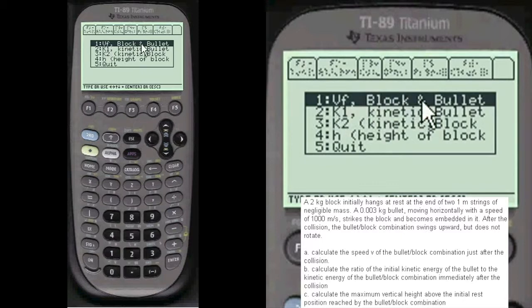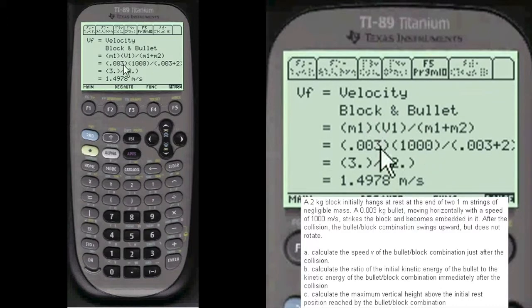Here's the velocity, final velocity of the bullet. So we're going to choose 1. And here's the formula for it. Here's the variables put in there. And here's the answer.